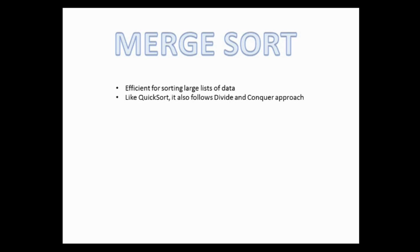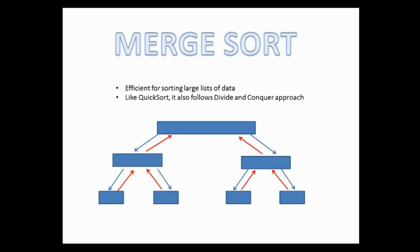Today I am going to explain the concept of merge sort. This sorting is efficient for large lists of data, and like quick sort, it also follows a divide and conquer approach. However, it differs from quick sort in that partitioning in quick sort is based on a pivot element, whereas in merge sort we divide the list into nearly two equal halves.